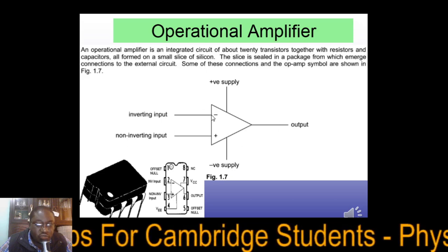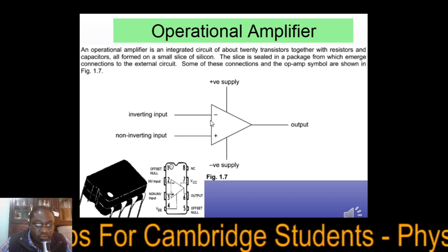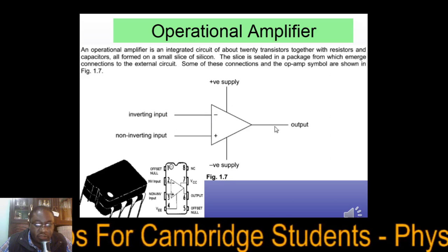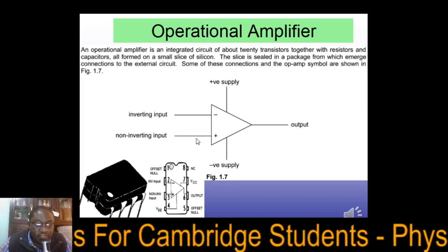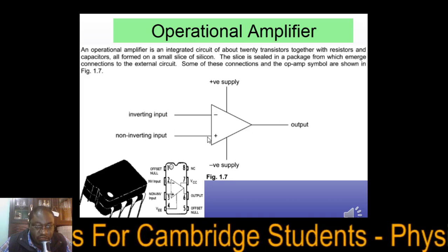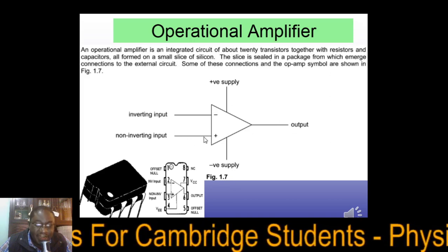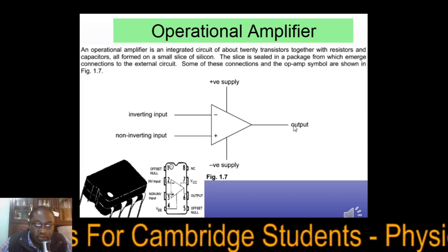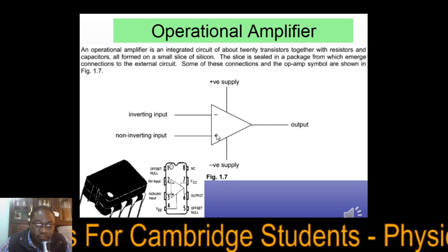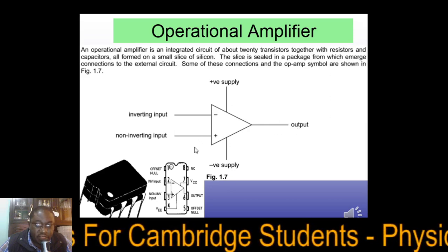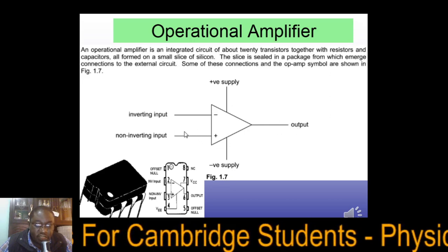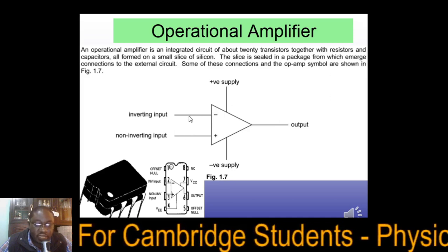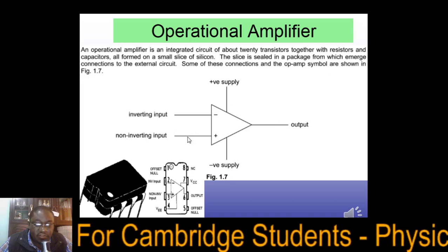If there's more voltage entering through the inverting input than the non-inverting input, then the output is going to come out as negative. If there's more voltage coming from the non-inverting input than the inverting input, then the output is going to come out as positive. So it basically compares the two voltages entering through the terminals — the inverting and the non-inverting.